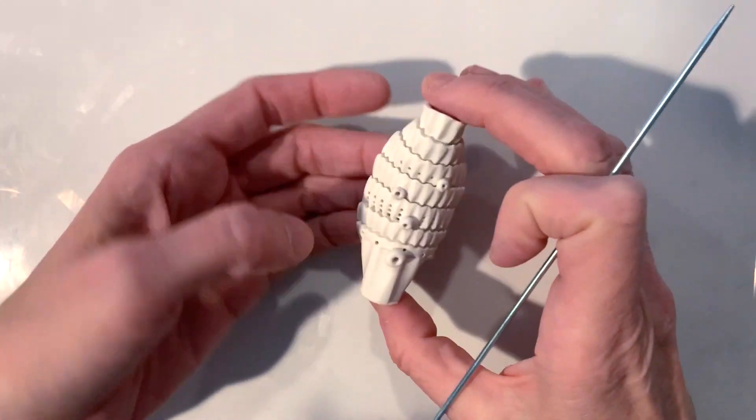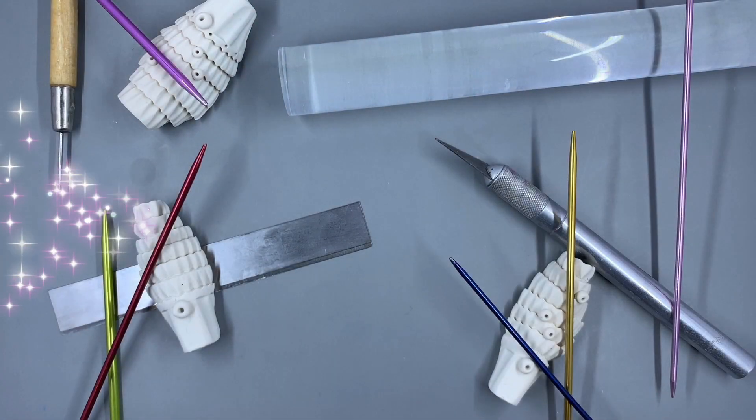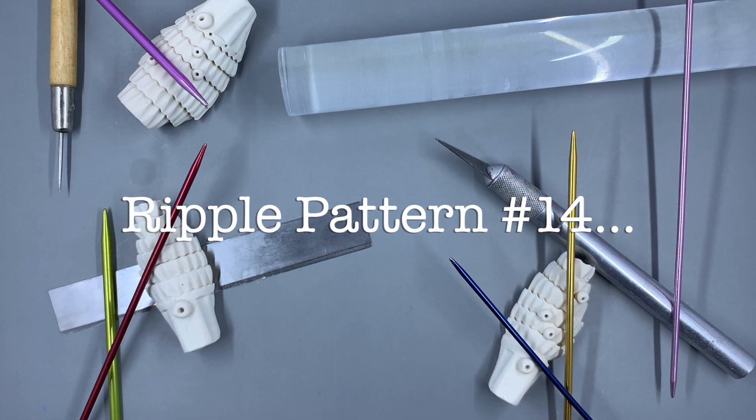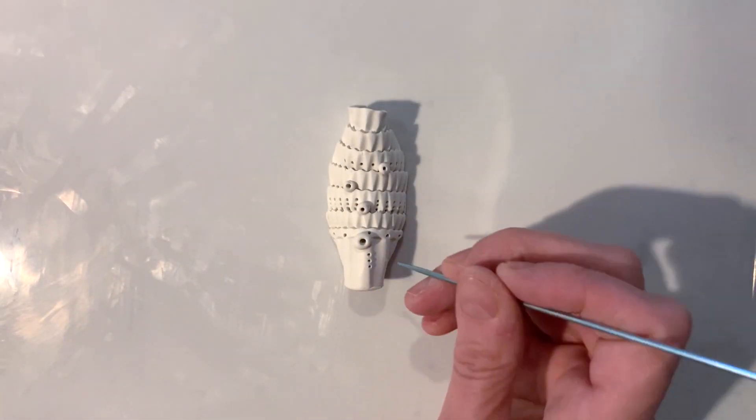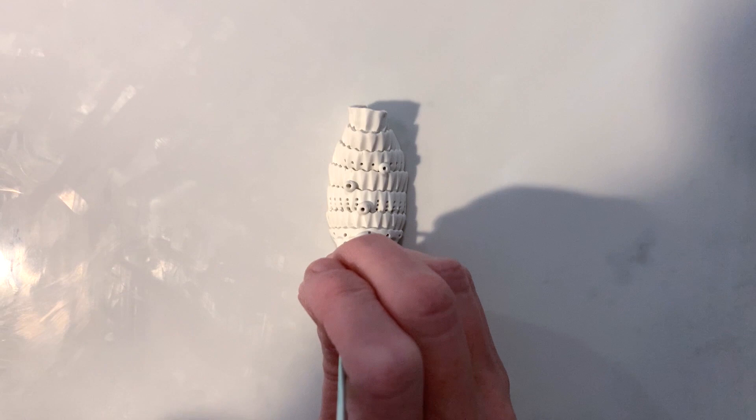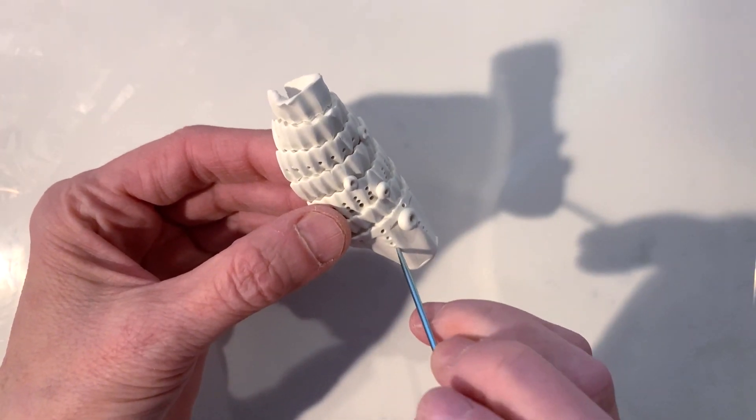Pattern 14: I decided to go back and place more poked holes on the bottom of this piece, and when I did so, it was on the more raised areas of the ripple pattern.